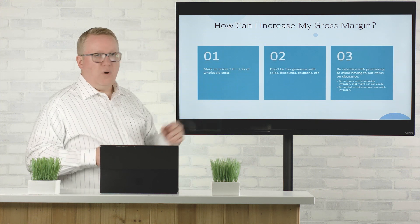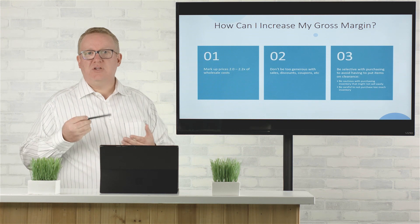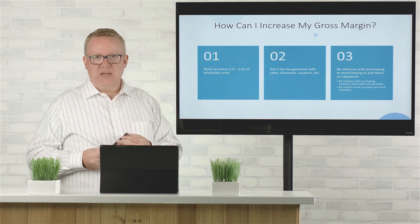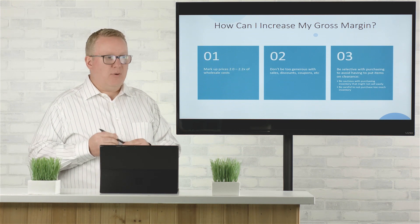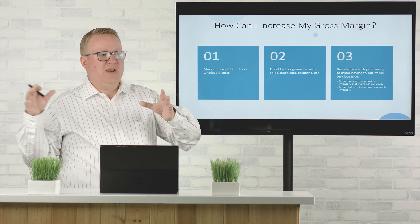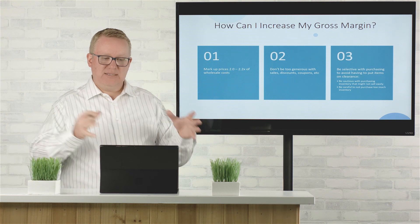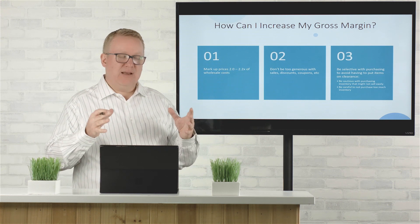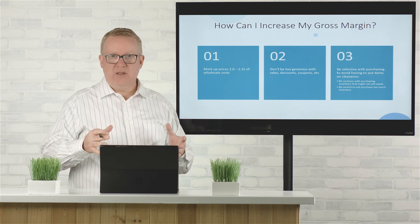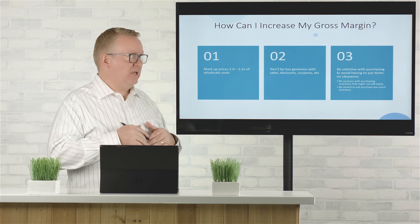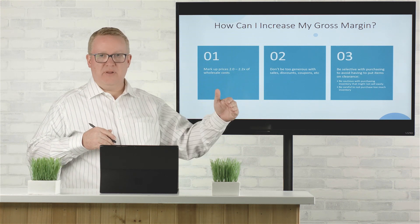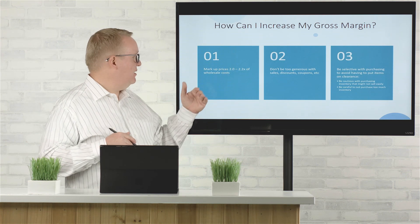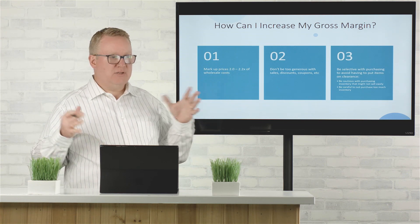Number one, we need to make sure that we mark up our prices sufficiently. Typically we want to make sure that whatever our cost is from the vendor, we're going to do at least a 2x markup on that — perhaps even a 2.2x markup.